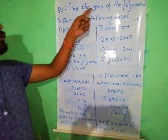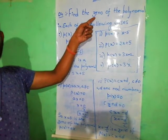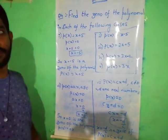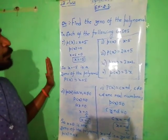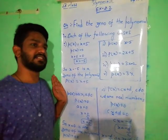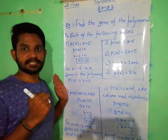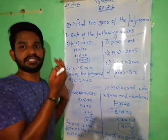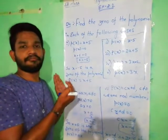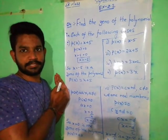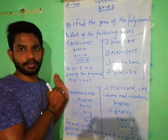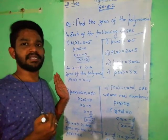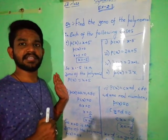To repeat: in the fourth question, we want to find the zeros of the polynomial by the solving method — simply set the given polynomial equal to 0 and find the x value. Exercise 2.2 is now completed. In this exercise, three types of models were discussed: how to find the zeros of a polynomial, checking whether a given x value is a zero, and finding the value of the polynomial at a particular variable value. In the next video, we will discuss concepts related to exercise 2.3.